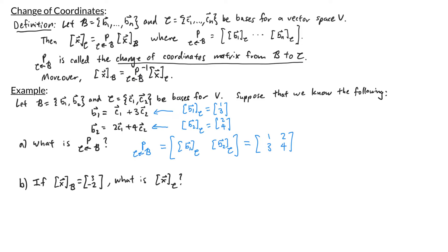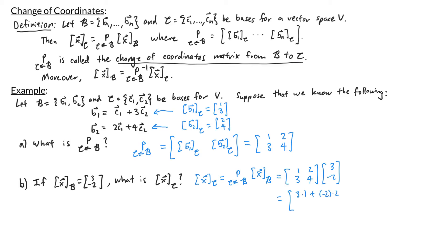In part b, we're given that the b-coordinate vector for x is (3, negative 2) and asked to find the c-coordinate vector for x. The c-coordinate vector for x equals P(b to c) times the b-coordinate vector, which is the matrix (1, 2 / 3, 4) times (3, negative 2). The top entry is 3 times 1 plus negative 2 times 2, giving negative 1, and the bottom entry is 3 times 3 plus negative 2 times 4, giving 1. So the c-coordinate vector for x is (negative 1, 1).